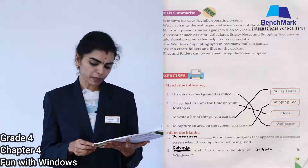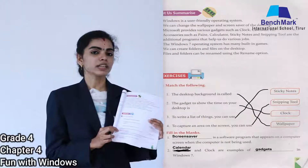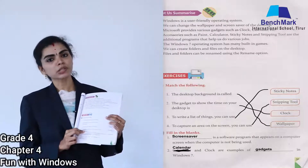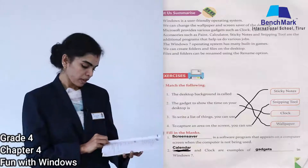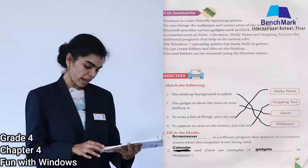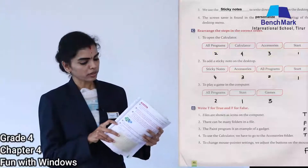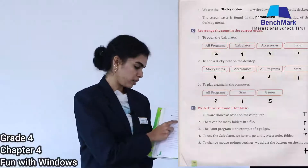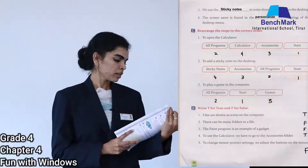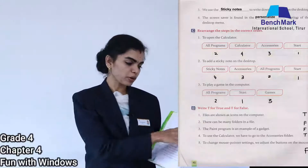Fill in the blanks: A dash is a software program that appears on a computer screen when the computer is not being used — that is our screen saver. Screen saver is a software program which automatically comes when the computer is not being used. Calculator and clock are examples of gadgets in Windows 7. We can use sticky notes to write down a to-do list on the desktop. The screen saver is found in the Personalize option of the desktop menu — in Personalize we find screen saver.